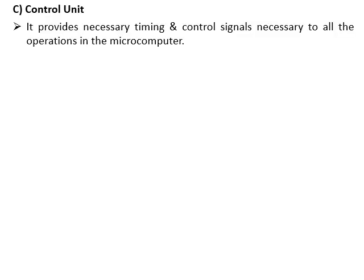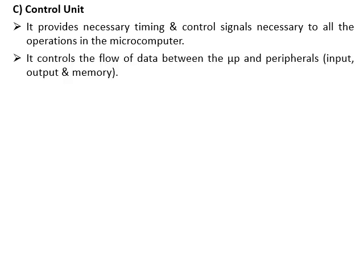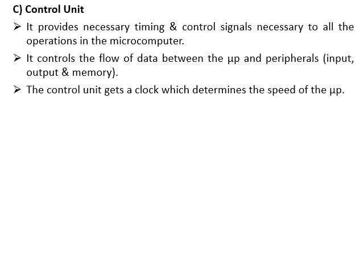Control Unit. It provides the necessary timing and control signals for all operations in the microcomputer. It controls the flow of data between the microprocessor and peripherals, which includes the input unit, output unit or devices, and memory unit or devices. The control unit receives a clock which determines the speed of the microprocessor.